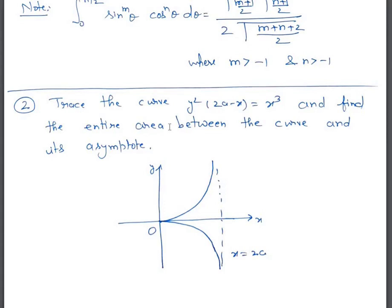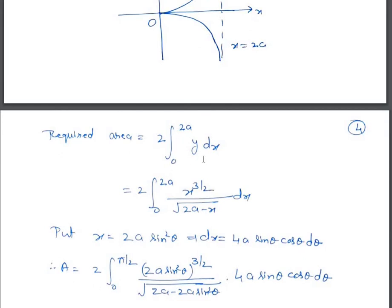The next example: trace the curve y²(2a - x) = x³ and find the entire area between the curve and its asymptote. The curve is symmetric about the x-axis. The asymptote parallel to the y-axis is found by setting the coefficient of the highest power of y to zero: 2a - x = 0, giving x = 2a. The curve does not exist when x < 0 or x > 2a. So the limits for x are from 0 to 2a, and the required area is 2 ∫₀^{2a} y dx.